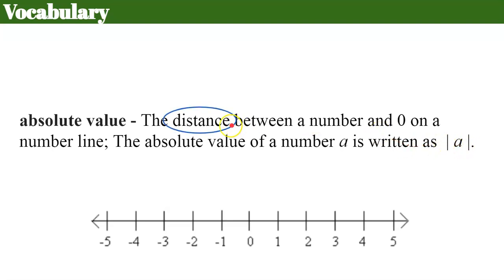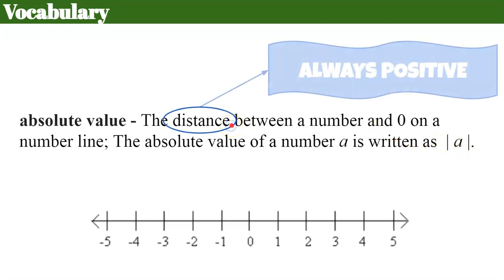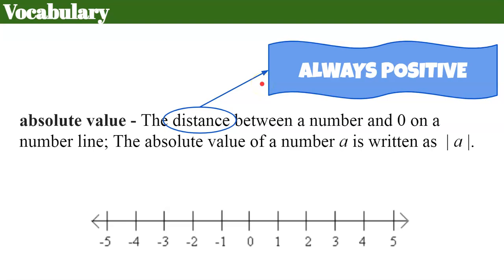When we talk about distance we need to understand that distance is always positive. When you talk about traveling somewhere — say you're going to grandma's house — you may have traveled 20 miles to get there. We always say that you're positive 20 miles from home; you don't ever say you're negative 20 miles. The distance you travel is always a positive number.